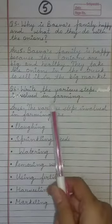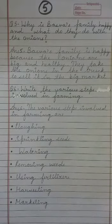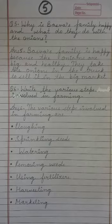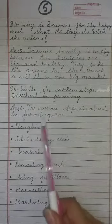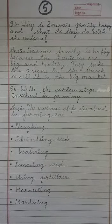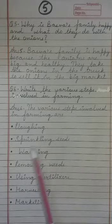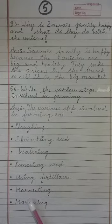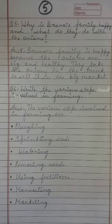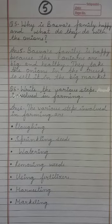Question 6: Write the various steps involved in farming. Aapko steps likhna hai jo farming mein involved hote hain. Answer: The various steps involved in farming are: Plowing, sprinkling seeds, watering, removing weeds, using fertilizers, harvesting, and finally marketing. So children, complete these exercises in your notebook. Thank you children.